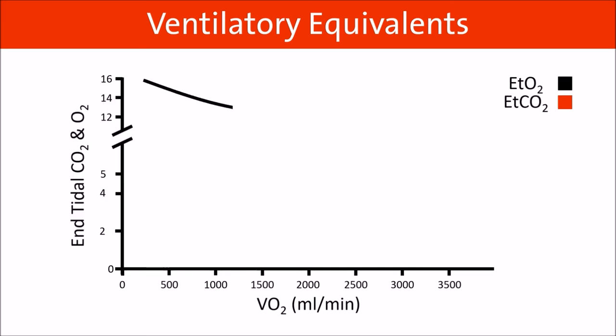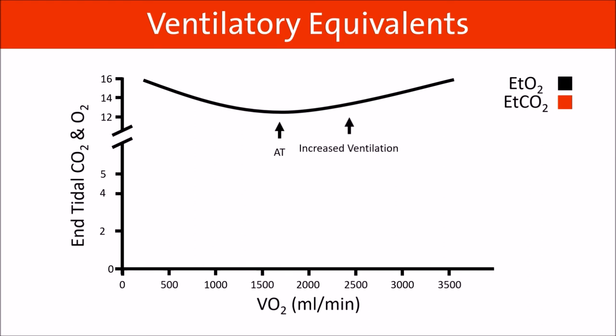Initially you will see a decrease in VE/VO2 as more oxygen is being used, but after the anaerobic threshold you will see an increase as ventilation rises without more oxygen being absorbed. Similarly, with VE/VCO2, you will initially see an increase in CO2 exhaled, but at the respiratory compensation point, due to increased ventilation, you will see a drop in VE/VCO2.